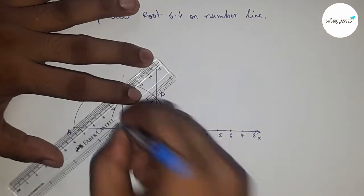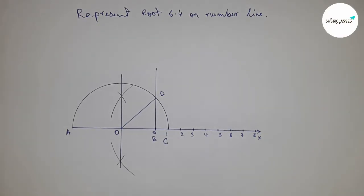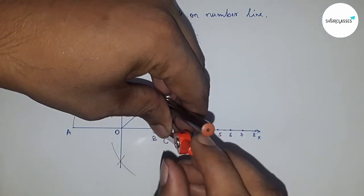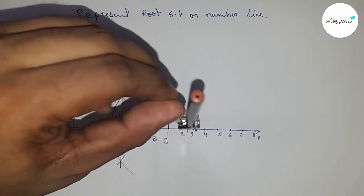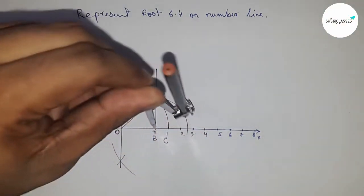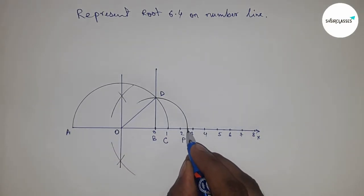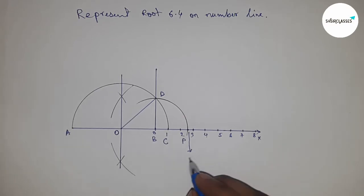Now, taking the length BD by compass and drawing an arc which cuts the number line at a point. The point is B prime, and this is the representation of root 6.4. So this is root 6.4.